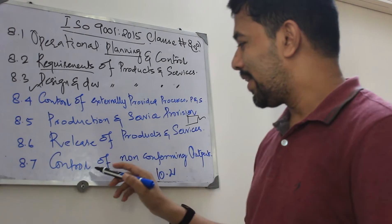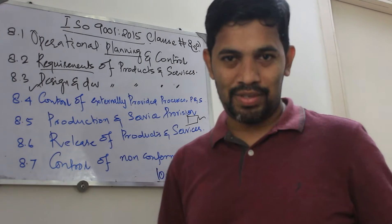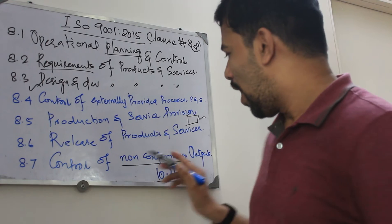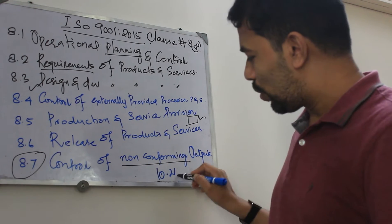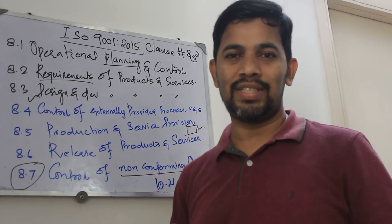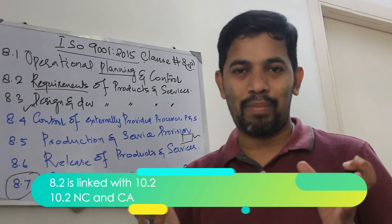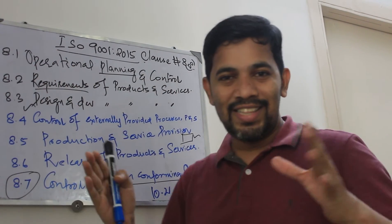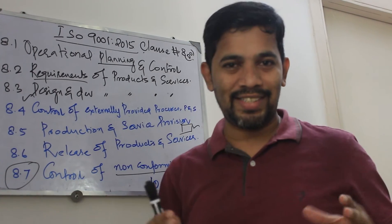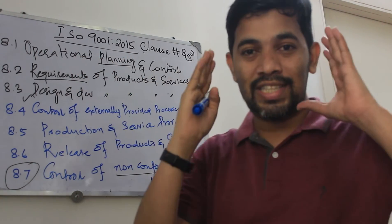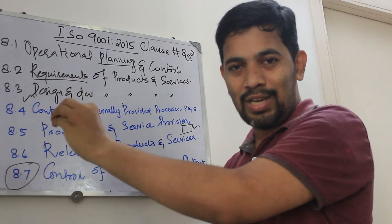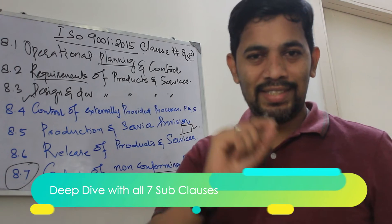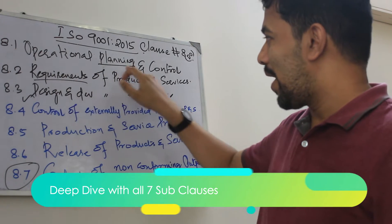You do a shipment, and sometimes a customer complaint comes — due to non-conformance, if you are not meeting the requirement, the customer might return the product or service as a complaint. How do you manage that? For more information you can also go through class number 10.2, which is non-conformance and corrective action — I have already developed that in the past.